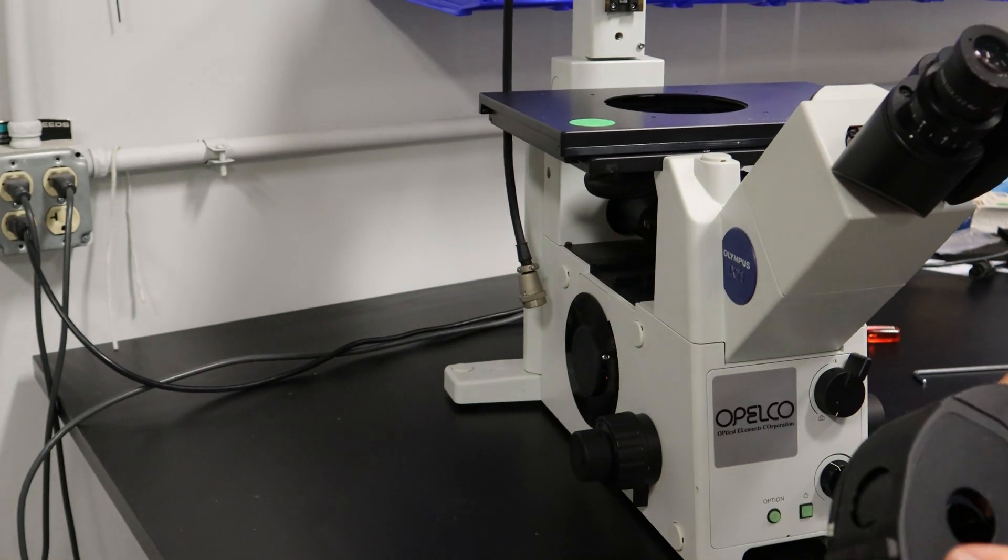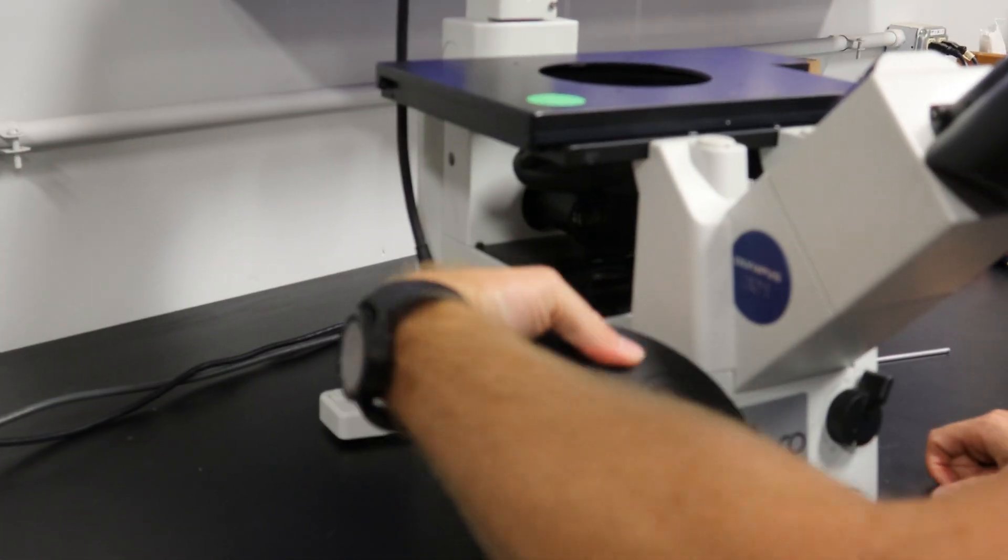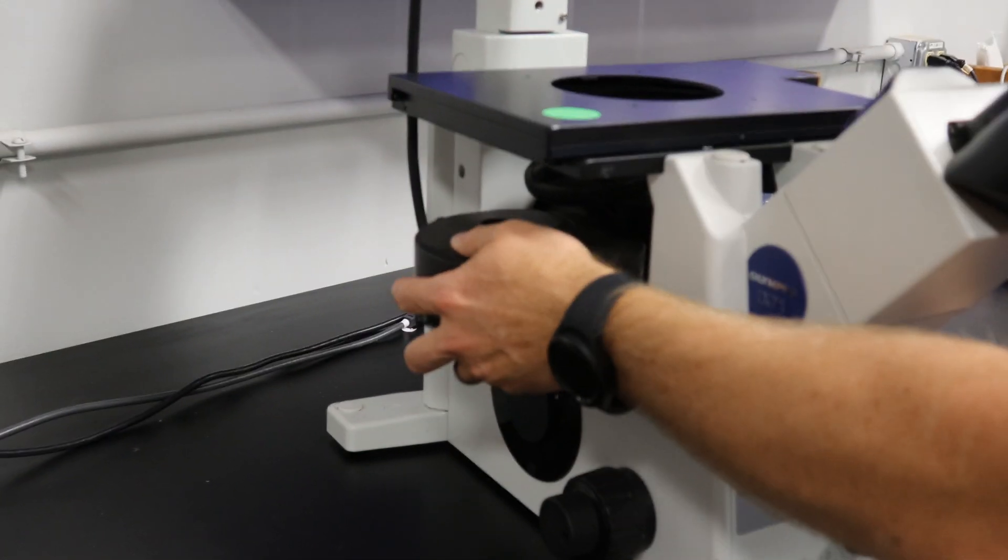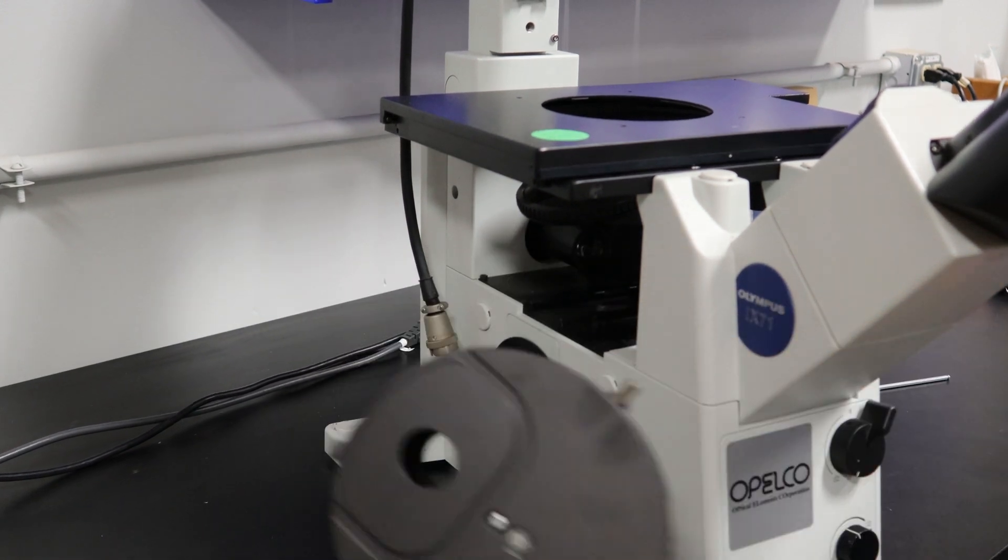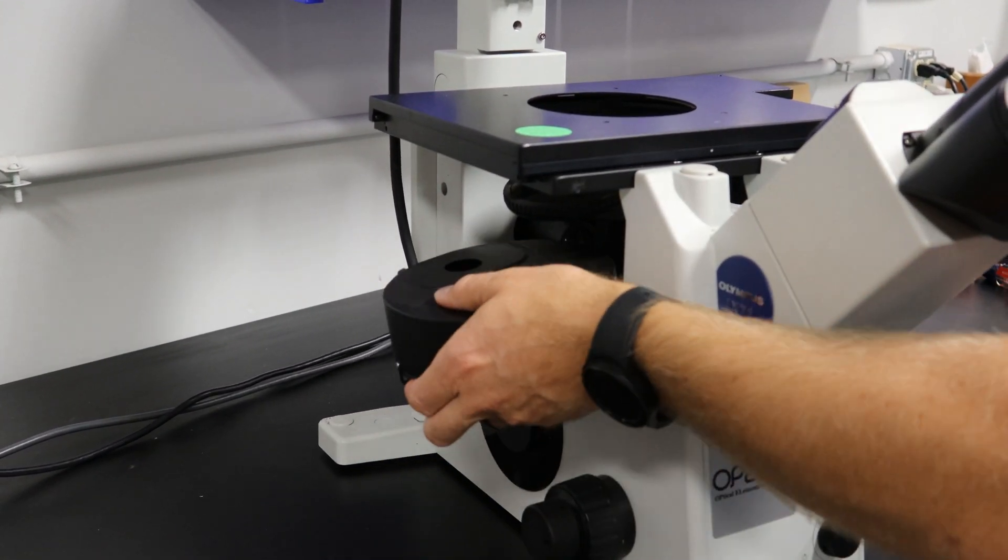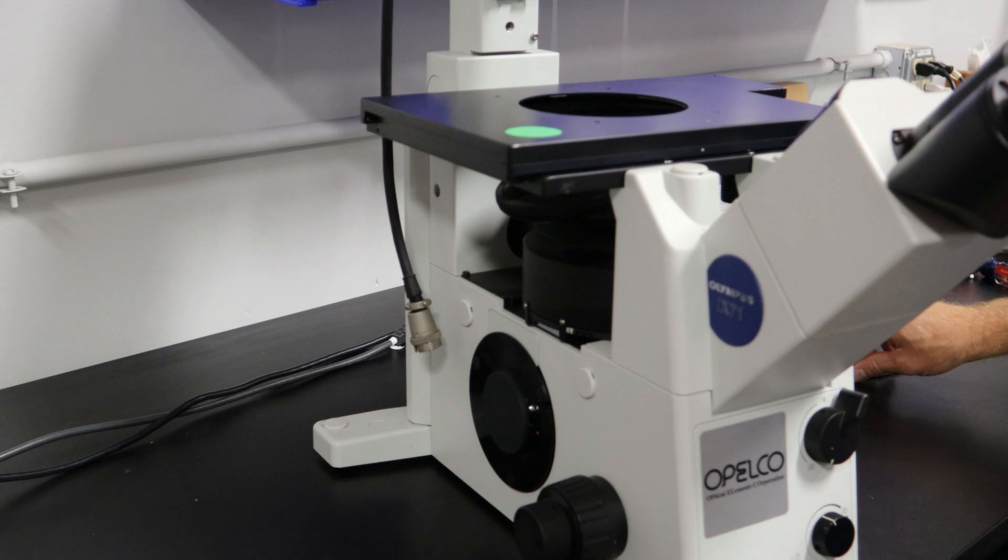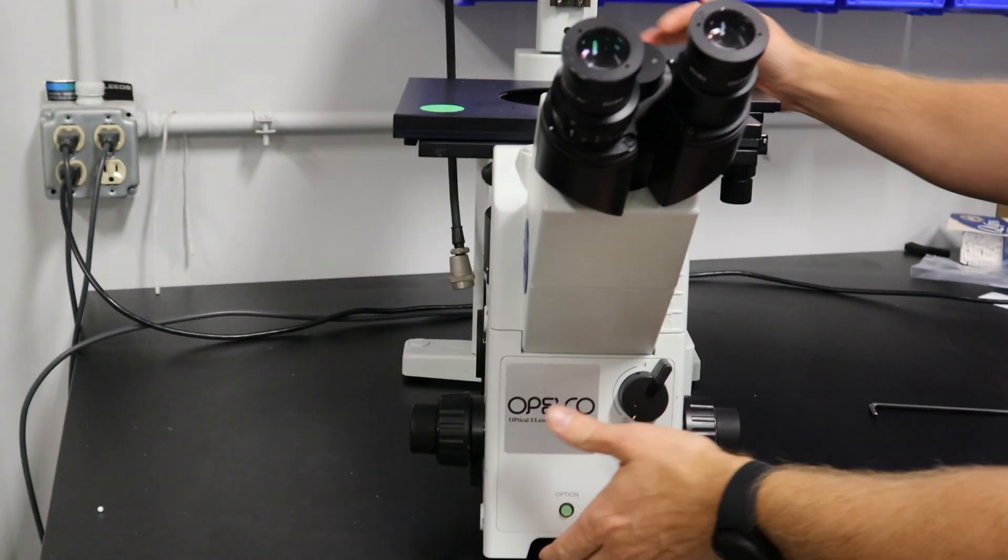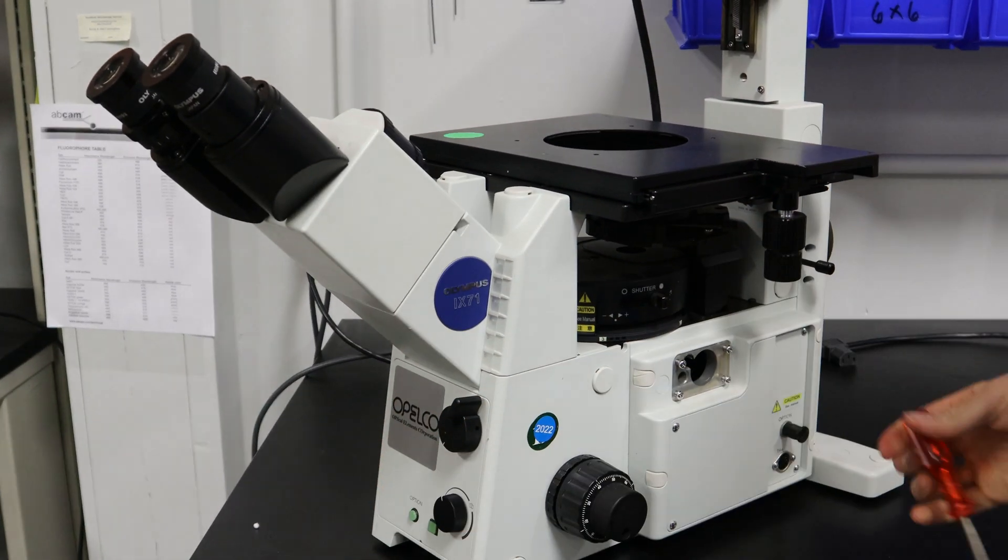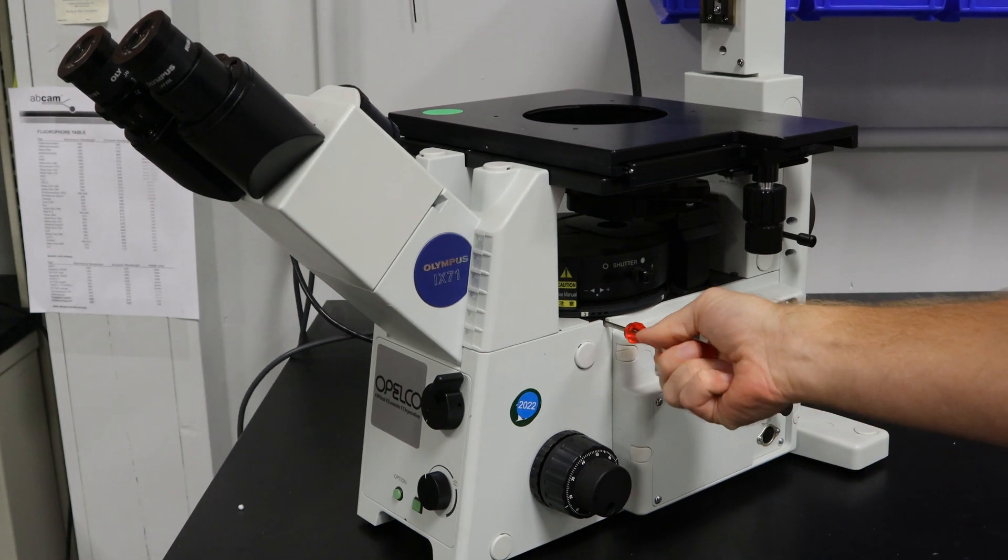The fluorescent turret will slide in right here on this dovetail. Make sure not to rotate it. Then you want to lock it in right here with a three millimeter Allen wrench on this side.